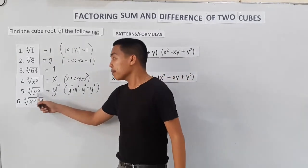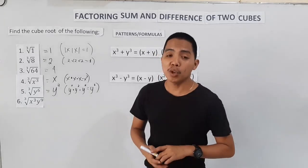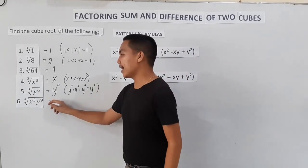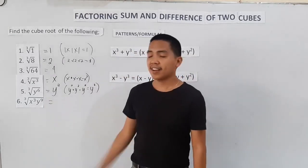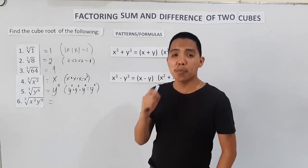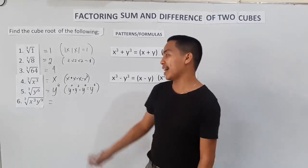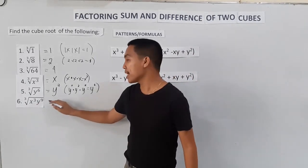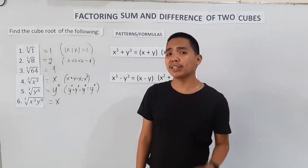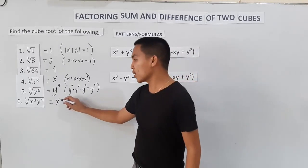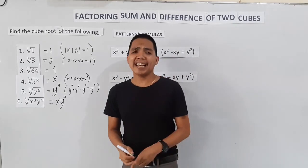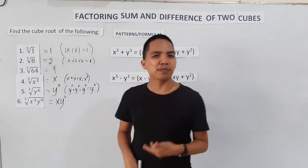Or simply, divide the exponent of the variable by three. How about the cube root of x³y⁹? The cube root of x³ is x. The cube root of y to the ninth power is y³. I think you've learned how to find the cube root. I think you're ready now on how to factor sum and difference of two cubes.